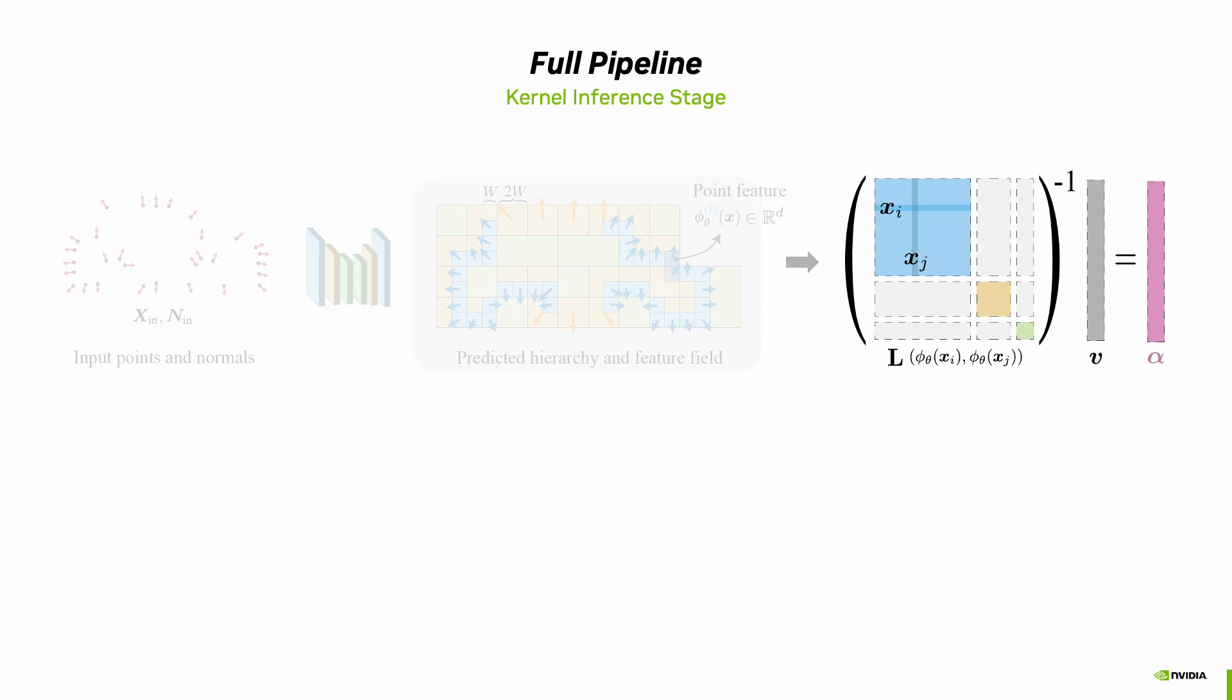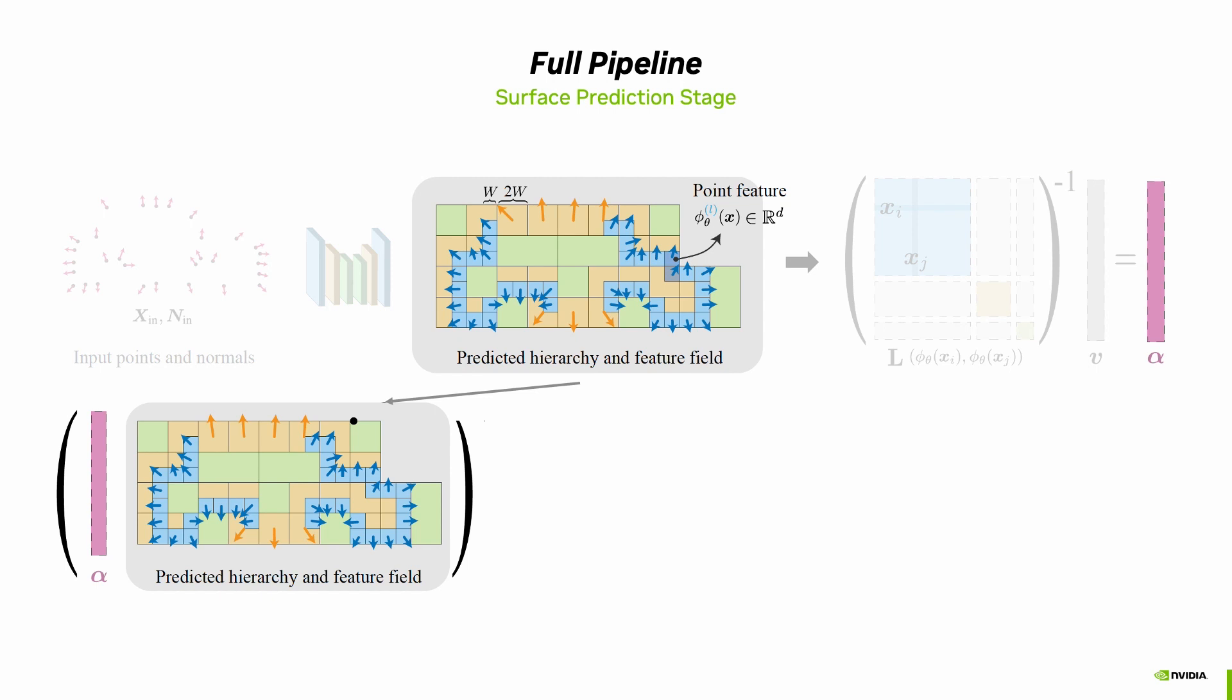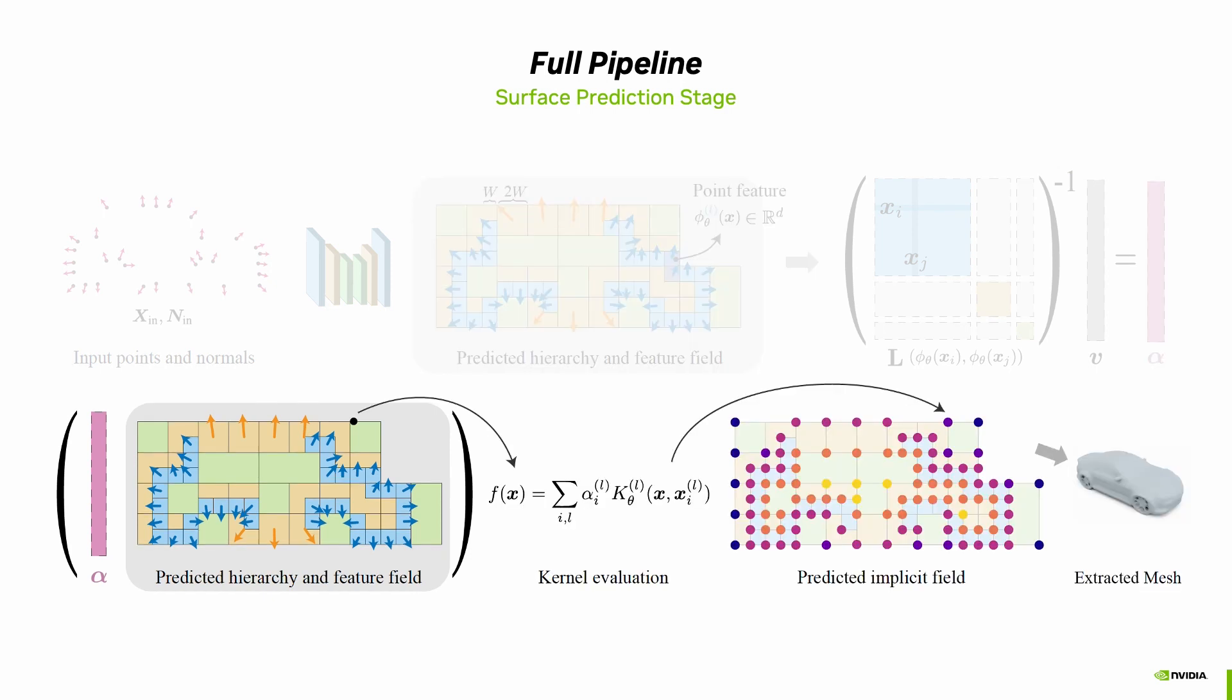We then build the sparse linear system to minimize the surface-fitting error according to the gradient-based kernel formulation, as described earlier, and solve it using a sparse solver. Taking the solved coefficient alpha, as well as the predicted kernel field, we evaluate the implicit function that defines the geometry. Finally, the triangular mesh could be extracted by running isosurfacing algorithm over the implicit field.